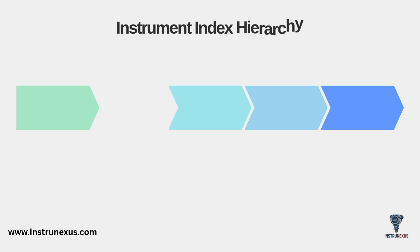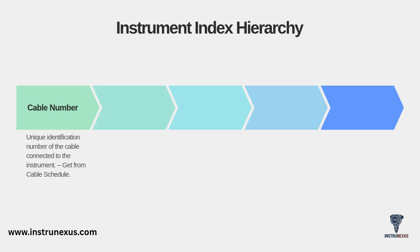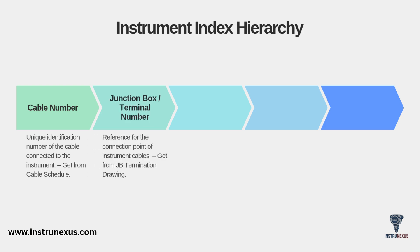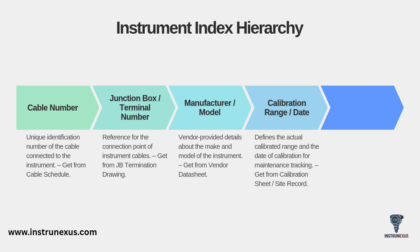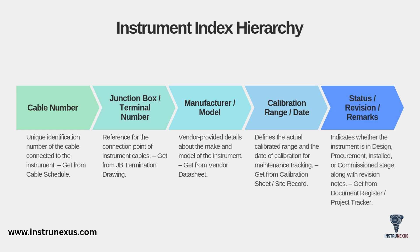The last part of the hierarchy covers specific connection, procurement, and maintenance details. Here you'll track the cable number connected to the instrument, obtained from the cable schedule. You'll list the junction box and terminal number as a reference for the connection point, from the JB termination drawing. As the project progresses, you'll add the manufacturer and model from the vendor data sheet. For the full life cycle, you'll track the calibration range and date for maintenance tracking, and the status — is it in design, procurement, or installed? This, along with revision notes, comes from your project tracker.